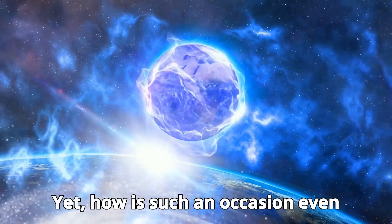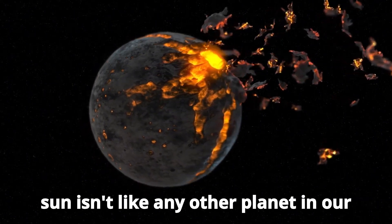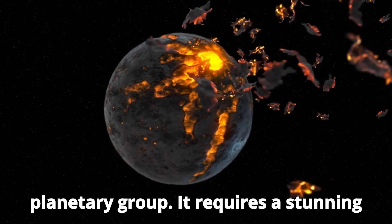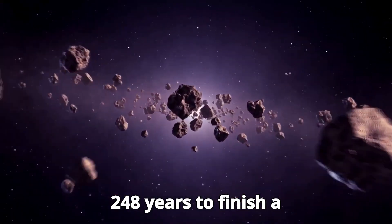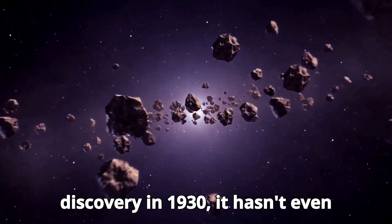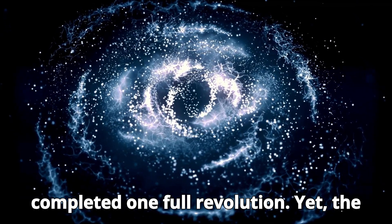Yet, how is such an event even conceivable? Pluto's journey around the Sun isn't like any other planet in our planetary group. It requires a stunning 248 years to complete a single orbit, meaning that since its discovery in 1930, it hasn't even completed one full revolution.